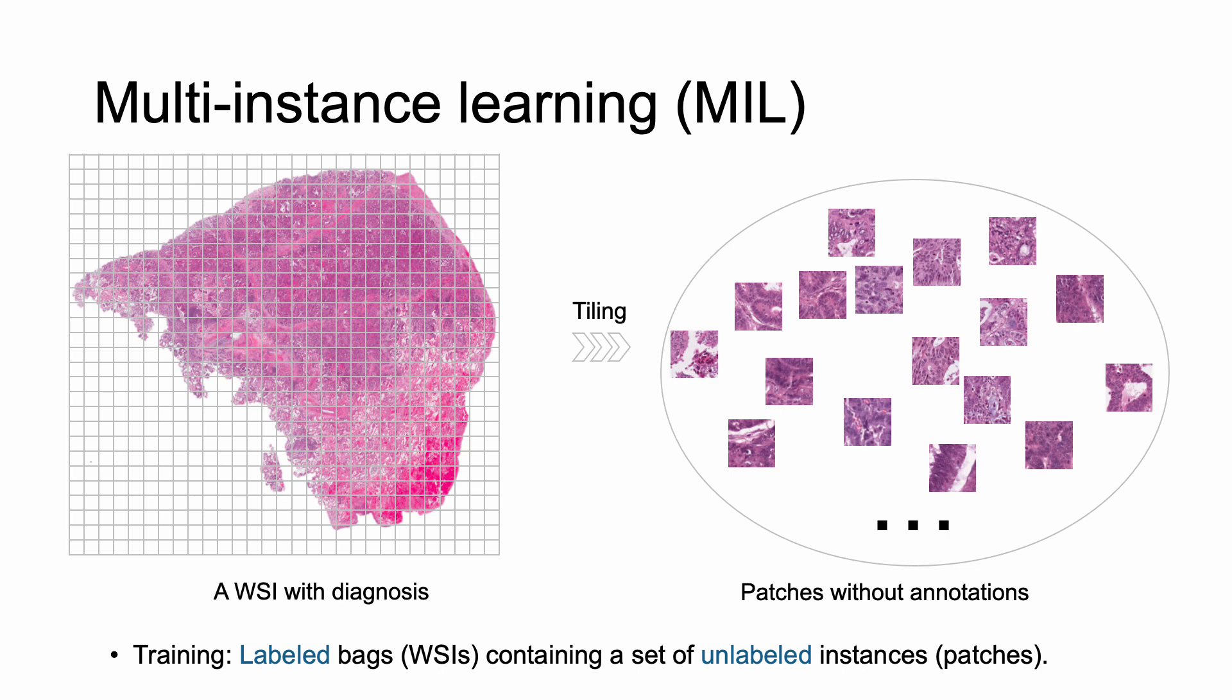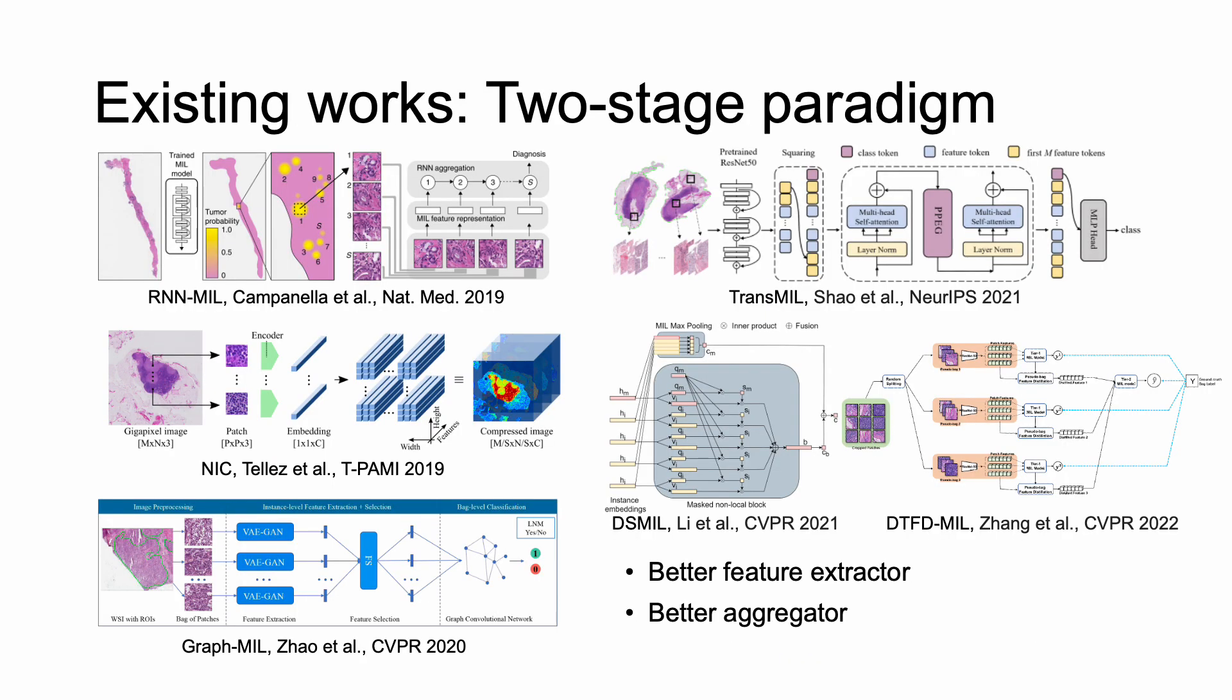And therefore, the Whole Slide Image is called bag and the patches are called instances. During training, we can only have supervision at the bag level. The prevalent bag-level multi-instance learning for Whole Slide Images are usually in the two-stage paradigm. In the first stage, each instance is embedded into vectors by a feature extractor, and in the second stage, the instance features are aggregated as a bag-level feature for downstream tasks. The existing works are proposed to improve these two stages respectively, and it is convinced that learning better instance features and modeling more accurate instance relationships can bring better performance of multiple instance learning.